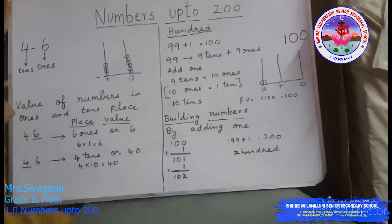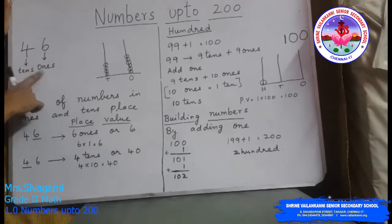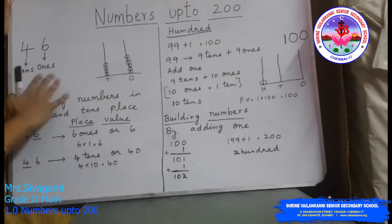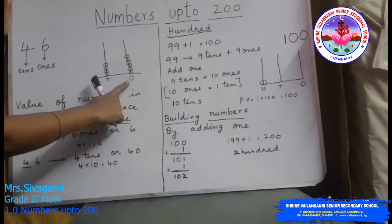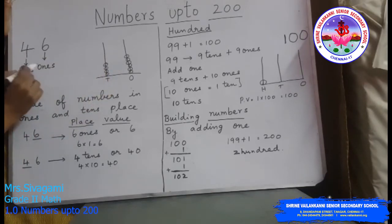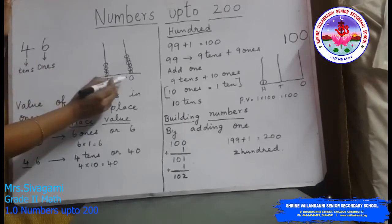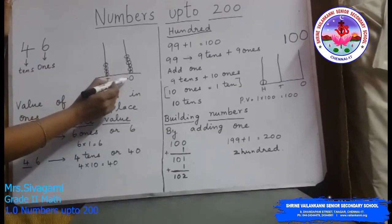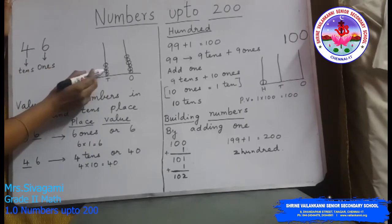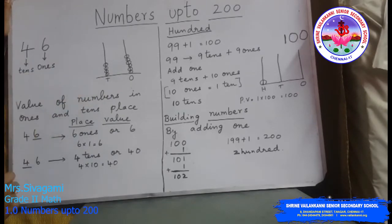First we will take a two-digit number. I have taken 46 — there are 6 ones and 4 tens. In abacus, we can represent this number like this. In the ones place, we just have to draw the beads according to the number in the respective places. There are 6 ones, so we will draw 6 beads in the ones place. There are 4 tens, so we will draw 4 beads in the tens place.